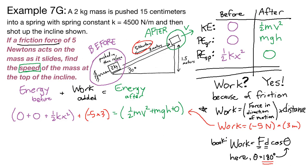So on the left here, the zeros will go away. We have one-half. K is 4,500. X is 15 centimeters. So 15 centimeters we need to train ourselves is 0.15 meters. We're dividing by 100. We get 0.15 meters, and that gets squared. Negative five times three is minus 15. And then on the right side, we have one-half times two kilograms times v squared. V is what we're looking for. Plus m, which is two, times g, which is 9.8, times the height, which is here at 1.5 meters.